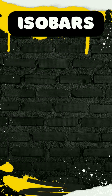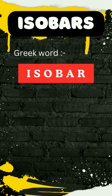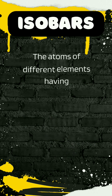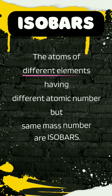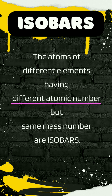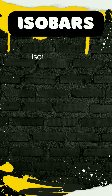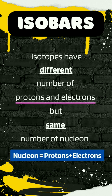Isobars. The word isobar is derived from the Greek word where iso means equal and bar means weight. Atoms of different elements having different atomic numbers but same mass numbers are isobars. They have different numbers of protons as well as electrons.